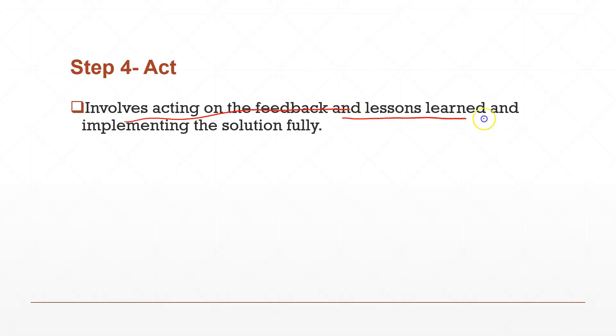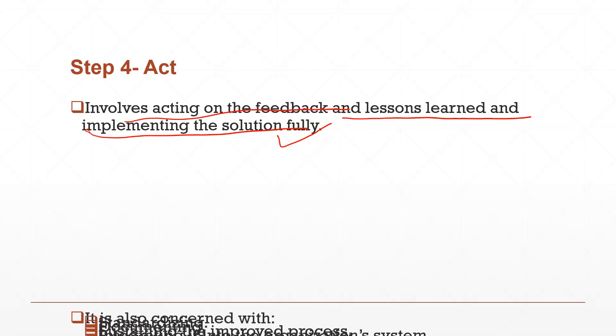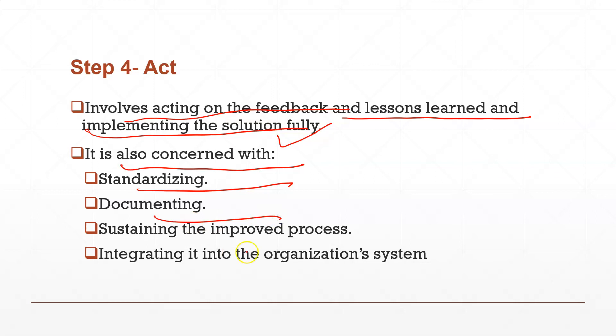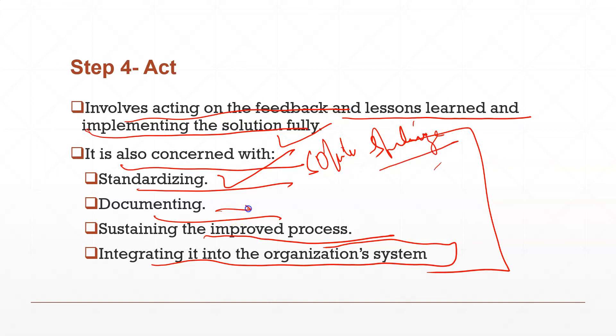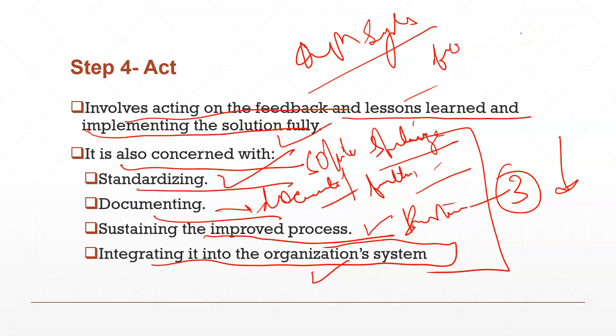Let's talk about the last stage which is called Act stage. In the Act stage, it involves acting on the feedback and lessons learned and implementing the solution fully. Here you work according to whatever feedback you get, whatever lessons you learned, whatever idea you got. You get feedback on your entire process - whether your process is running correctly or not, and whether you can fully execute that solution and use it in the future. It is concerned with standardization, documentation, sustaining the improved process and integrating with the organization system. Here there are four things: First, you will standardize the solution you implemented, meaning it can be used repeatedly. Then you will document it, write it down somewhere so that someone can read it and implement it again later. Third, you will try to sustain your improved process so it doesn't improve for 2-3 days and then decline again. Finally, you will try to fit it into your organization's system. All these stages come in your fourth stage which is called Act.